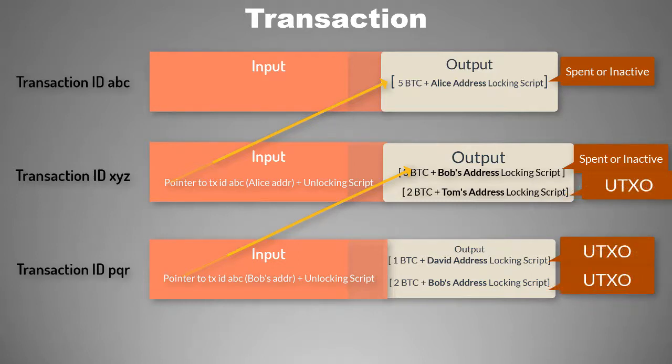So UTXO means unspent transaction output, and UTXO set is the collection of all unspent transaction outputs in a blockchain system. As you can see, any transaction will add some transaction outputs in the UTXO set and it will remove some existing transaction outputs from the UTXO set.